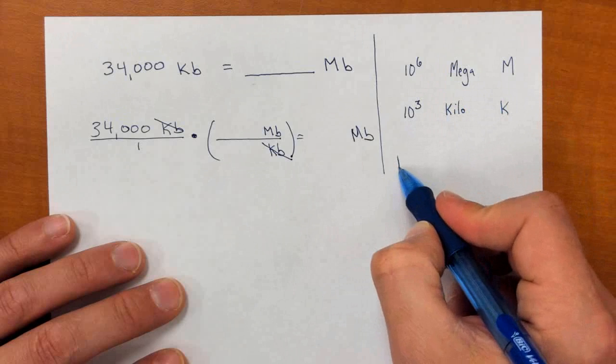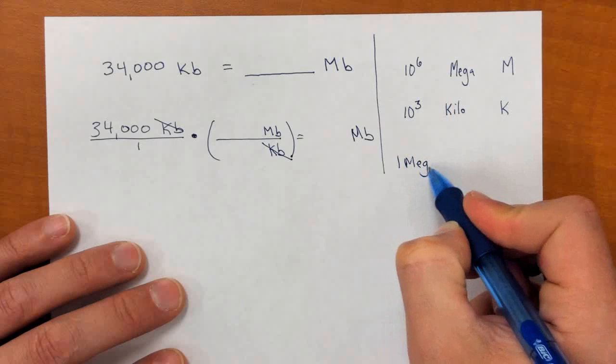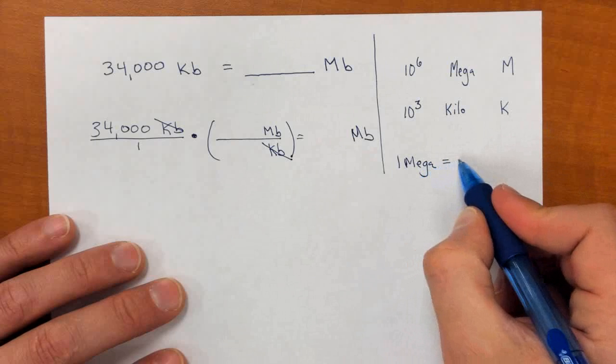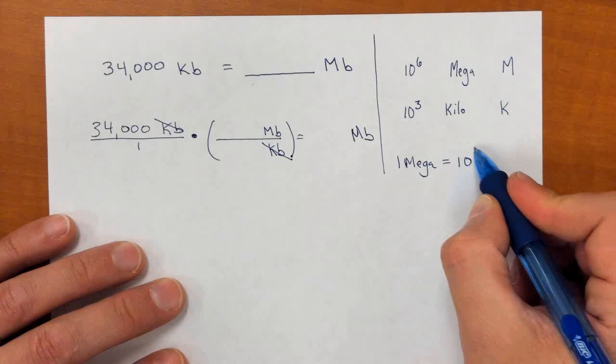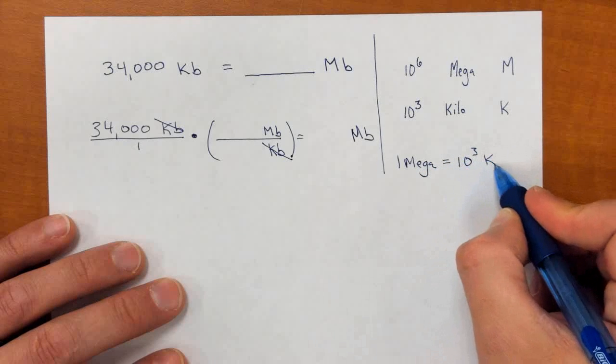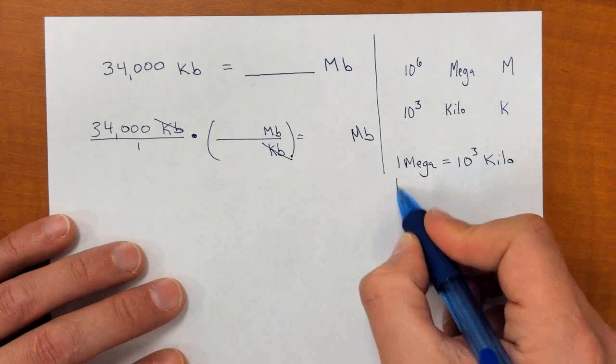Basically, we can write out that one mega unit is ten to the third kilobytes, or a thousand units.